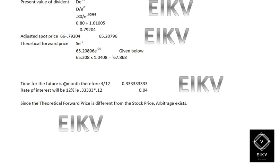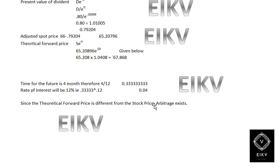Going further, the time for the future contract would be for 6 months. T equals 6 divided by 12, which is 0.5. Therefore the rate of interest will be 12%, so 0.5 into 0.12, which is 0.04. Since the theoretical forward price is different from the actual forward price, there would be an arbitrage.